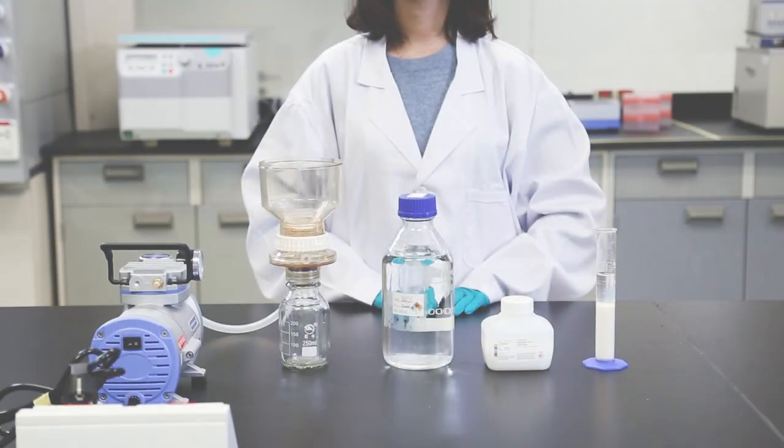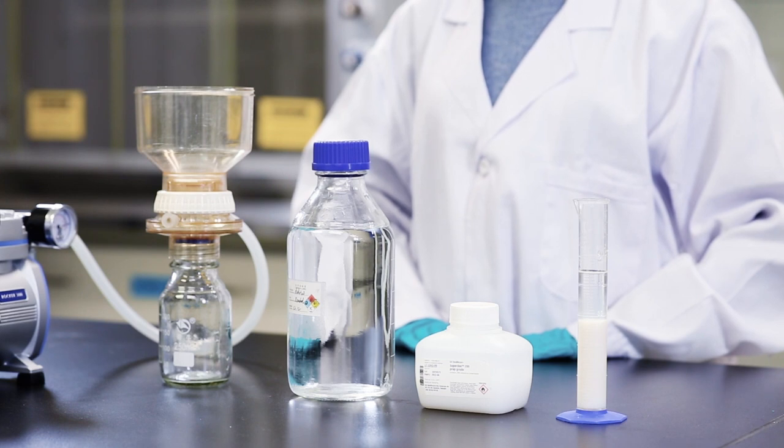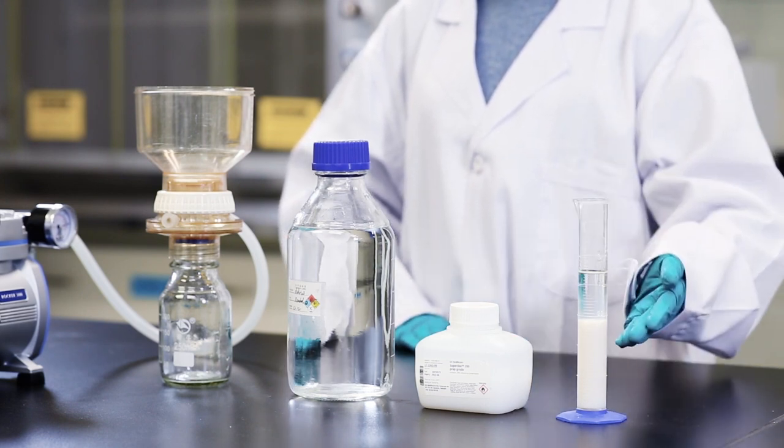Estimate the amount of slurry needed based on the final volume of the column. Most of our resins are delivered in a slurry concentration of 75% in storage solution, in most cases 20% ethanol.